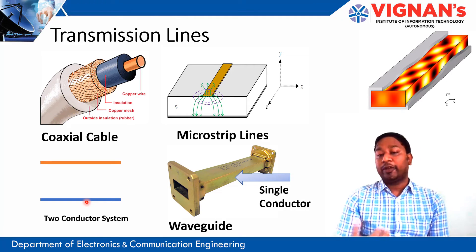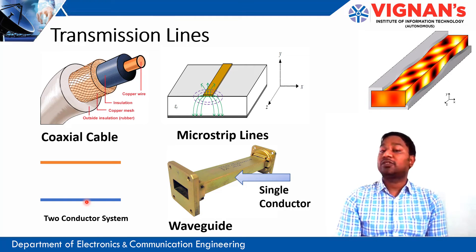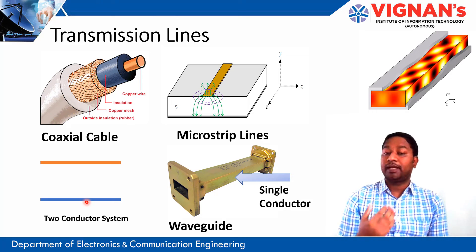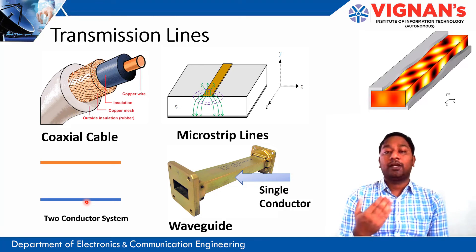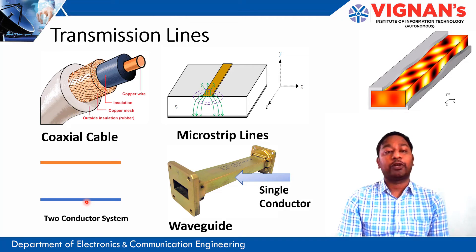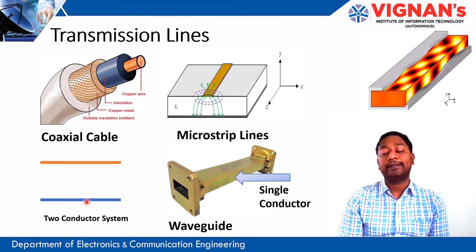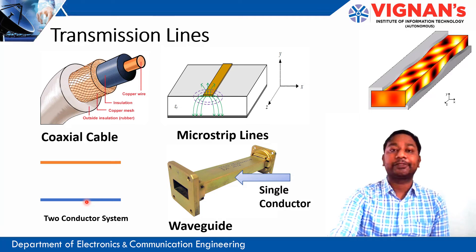In a waveguide, the wave propagates through multiple reflections from one point to another. That is the basic difference between a waveguide and a transmission line.